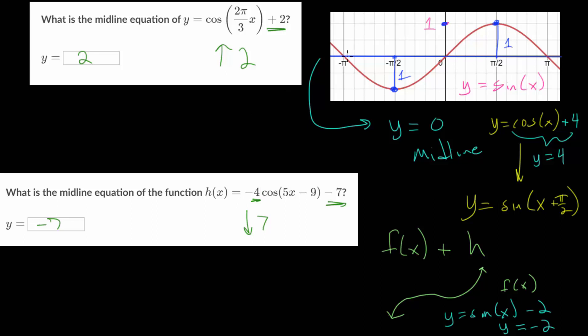If for instance we made this negative, then it would just be a mirror image across the x-axis here. But the negative will just cause a reflection over this midline. And again, this 5 will affect the period and minus 9 is what we call the phase shift that will shift it left or right.